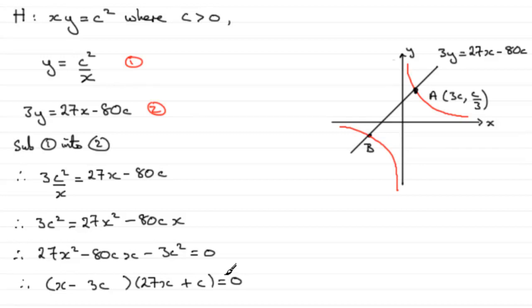So we can see that from this, we're not interested that X minus 3C equals 0 leading to X equals 3C because that would be the point A.